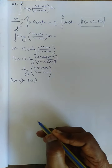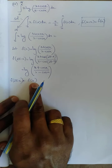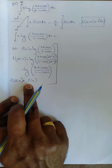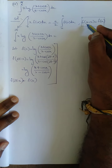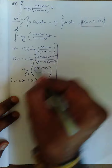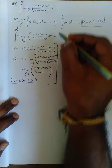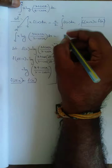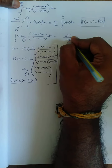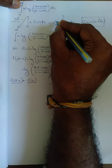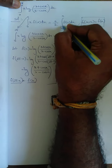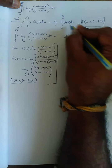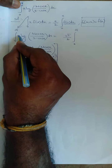Since f(2π-x) = f(x), the condition is satisfied. Applying the first property with a = 2π: the result is (a/2)·∫₀ᵃ f(x) dx = (2π/2)·∫₀²π log[(3+cosx)/(3-cosx)] dx = π·∫₀²π log[(3+cosx)/(3-cosx)] dx.